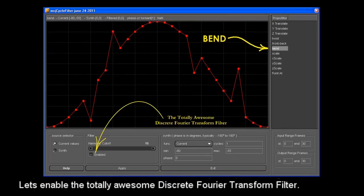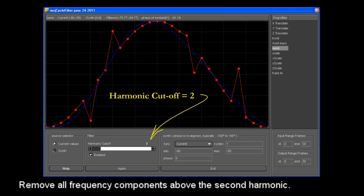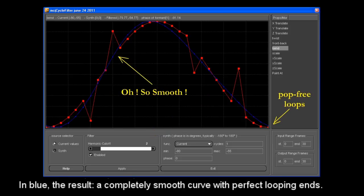Let's enable the totally awesome discrete Fourier transform filter and remove all frequency components above the second harmonic. In blue, the result: a completely smooth curve with perfect looping ends.